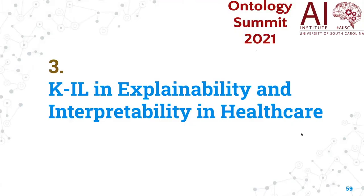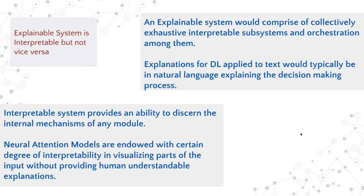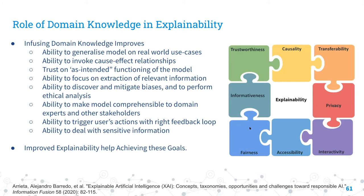Taking a healthcare example: an interpretive system provides an ability to discern the internal mechanism of any module. An explanation system would comprise collectively exhausting internal subsystems and the relations among them. Applied to deep learning, you'd typically be able to explain the decision-making process. Domain knowledge in explicability plays a very significant role. Infusing knowledge into the learning process will enable you to have all the interpretability capabilities — though I don't have time to address all of them today.